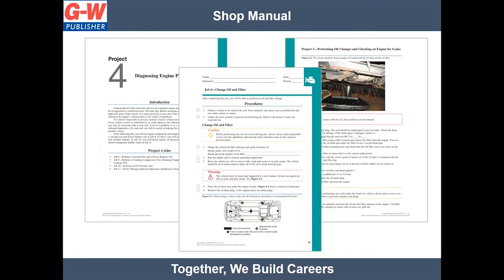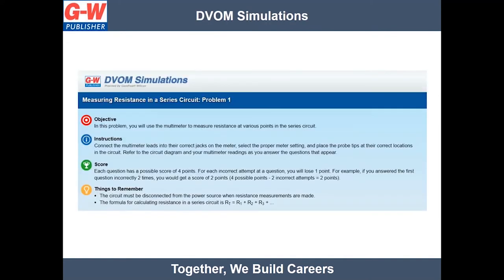The student shop manual, available in both print and digital format, contains a series of job sheets that provide hands-on practice of skills and procedures. The jobs are designed to be accomplished in one or two lab sessions. The DVOM simulations contain 12 simulations that consist of 24 individual problems. They give students valuable experience performing voltage, amperage, and resistance measurements with a simulated multimeter. Students can practice installing the test leads in the correct meter jacks, selecting the proper meter function, preparing the circuit, and placing the test probes in the circuit without fear of damaging the meter.